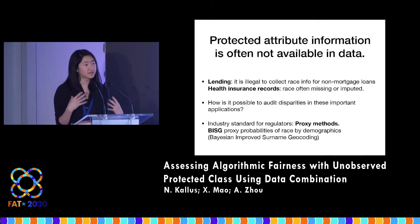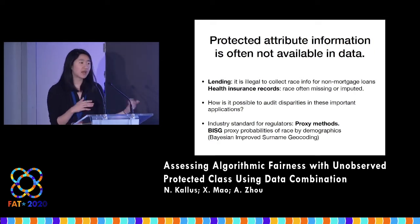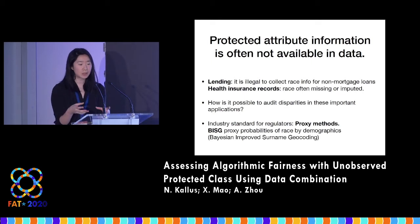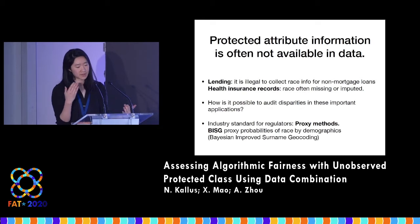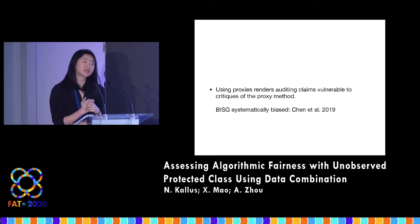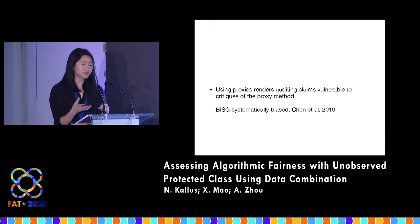So right now, what do regulators do? The industry standard is to use proxy methods. One high-profile proxy method is BISG, which tries to impute proxy probabilities of race by demographic information from the census file. Using Bayes, we get the probability of race membership by zip code and surname information. Using these proxy methods is a bit difficult because it renders auditing claims vulnerable to the particularities of the proxy method itself.